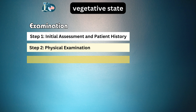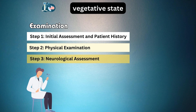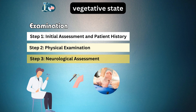Step 3: Neurological assessment. This involves a detailed evaluation of the patient's neurological responses, focusing on motor responses, sensory assessments, and signs of awareness.